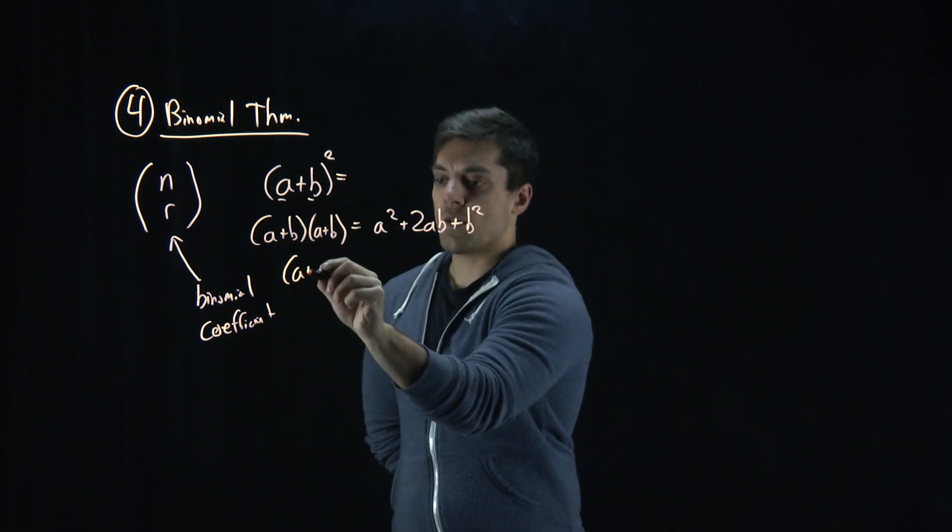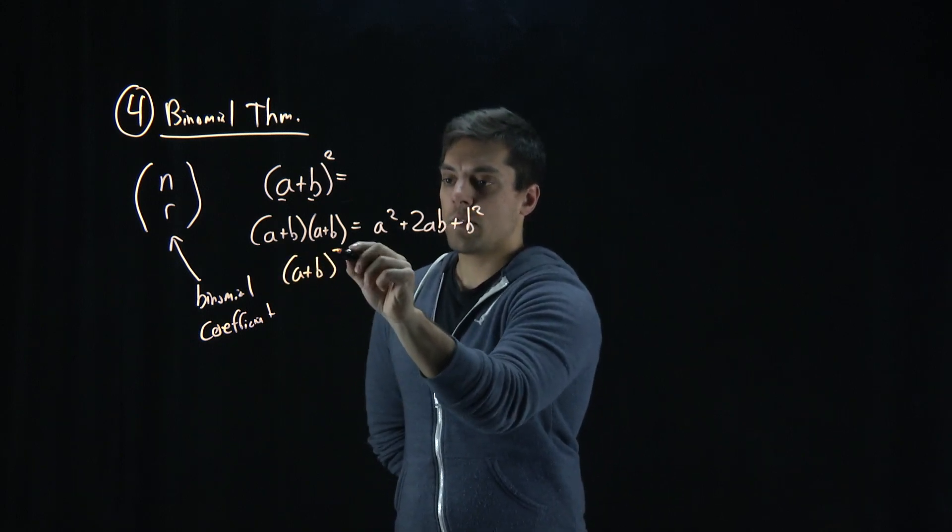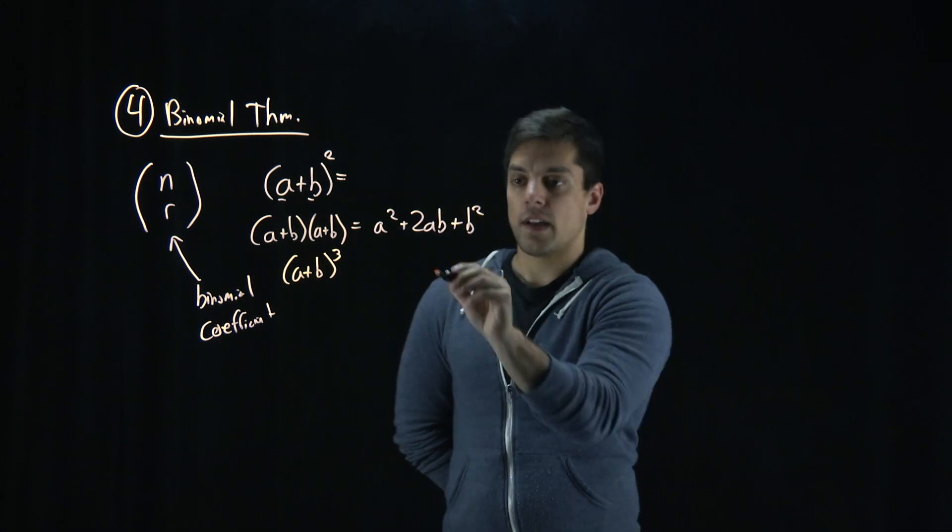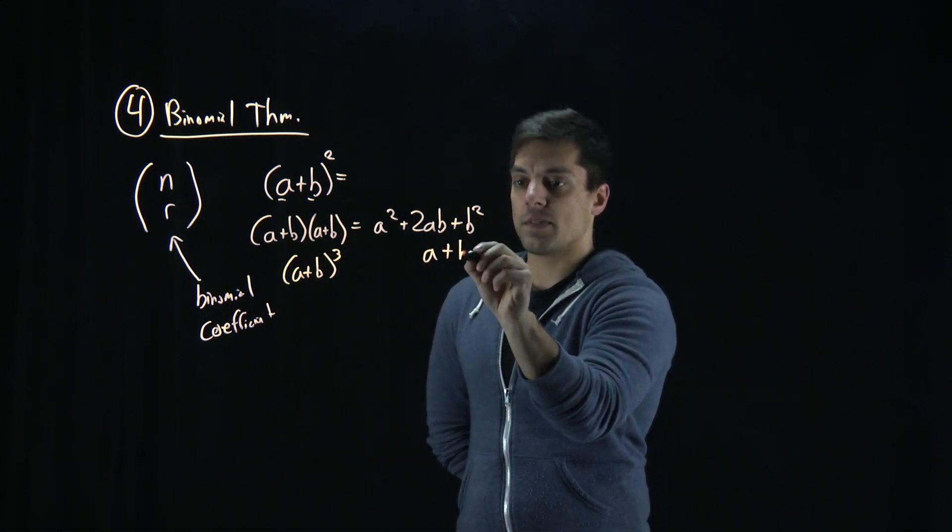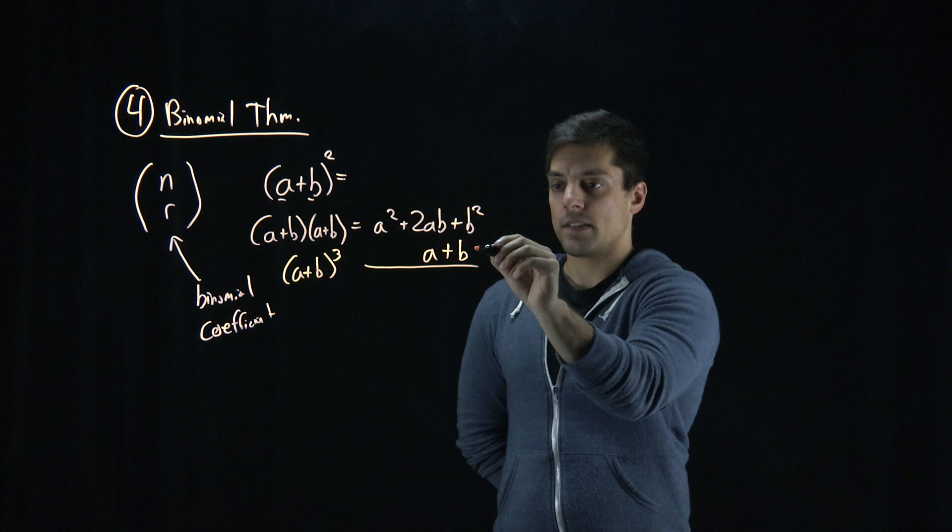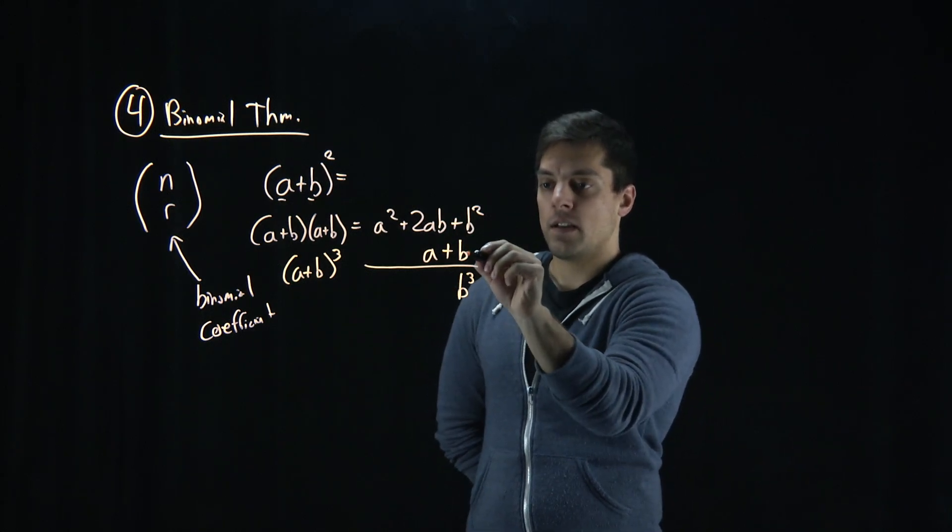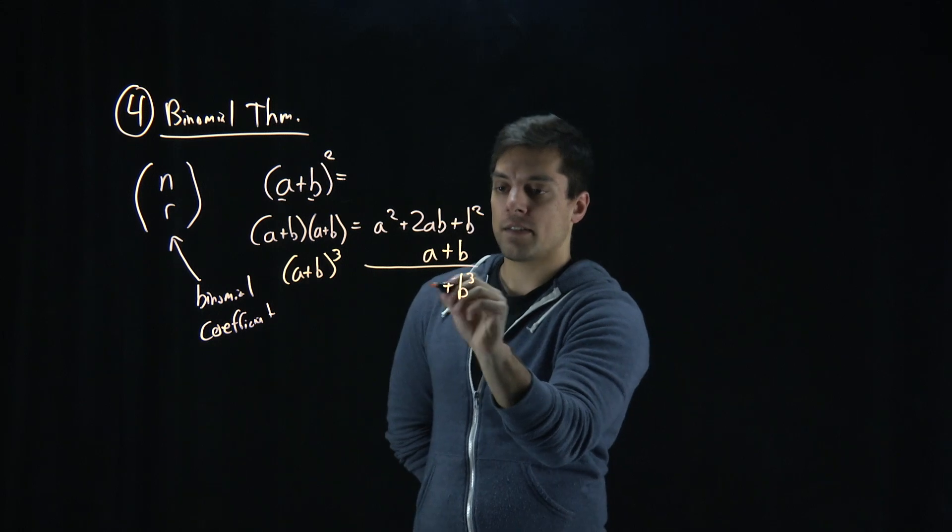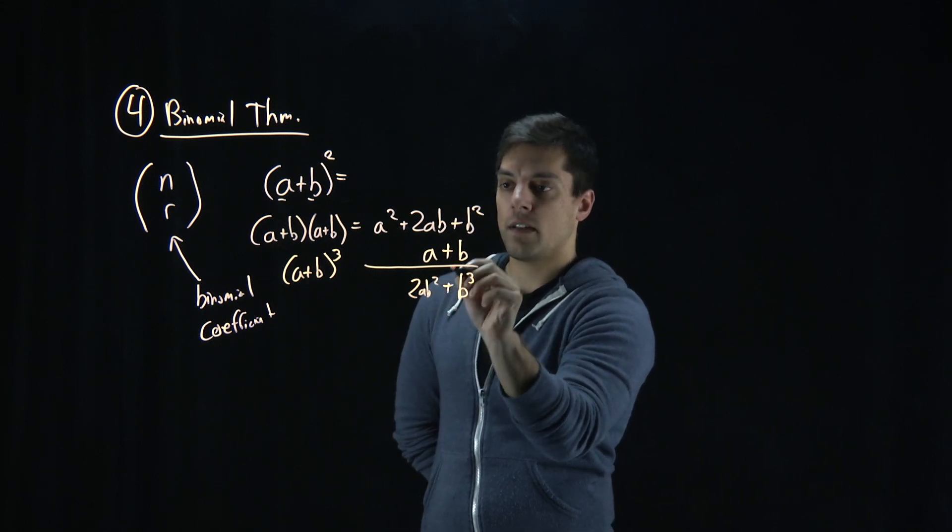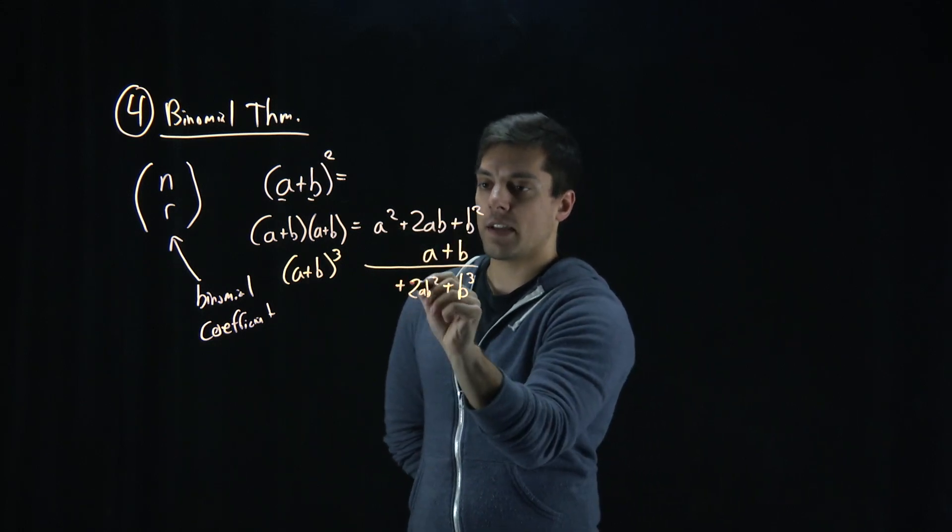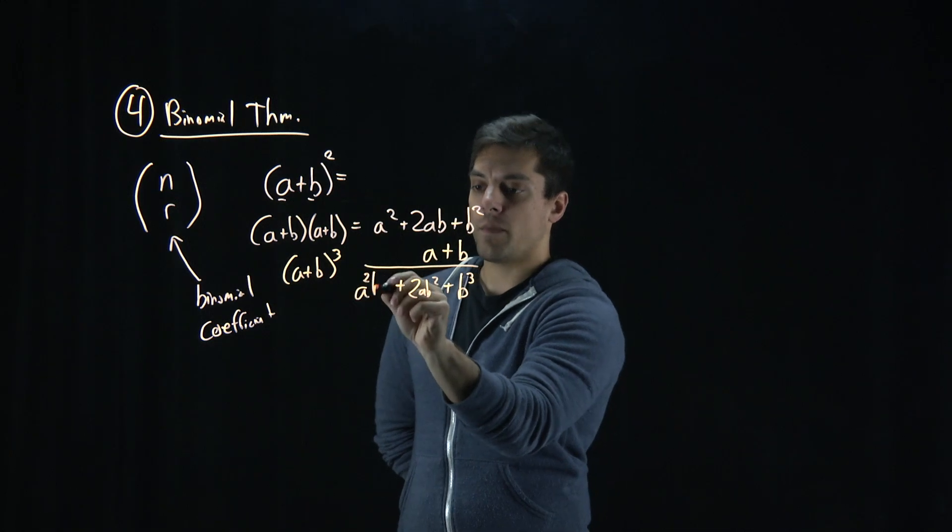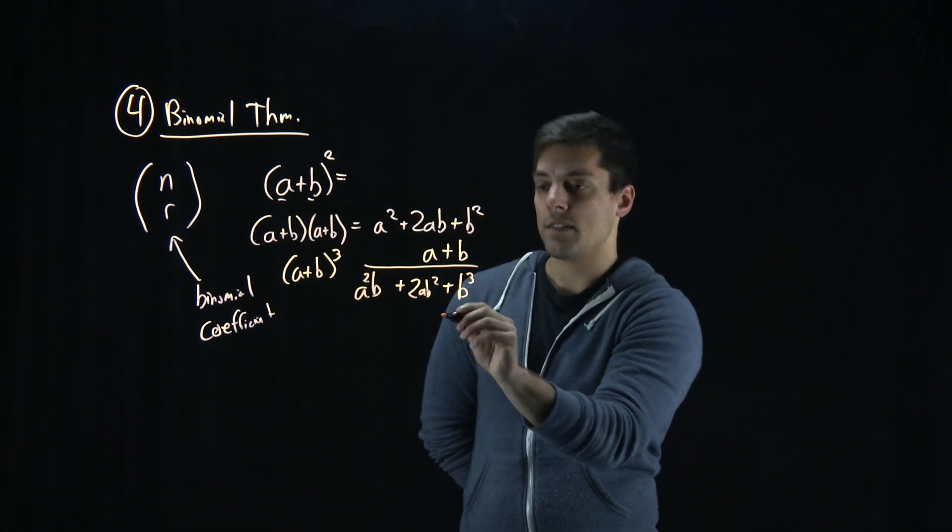But what if we're going to do a plus b cubed? Well, I can multiply in another a plus b. And I'm going to walk through this process of doing b times b squared to get b cubed, b times 2ab to get 2ab squared, b times a squared to get a squared b. And continuing on, multiplying by a,